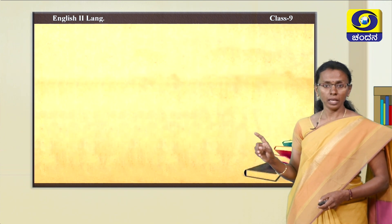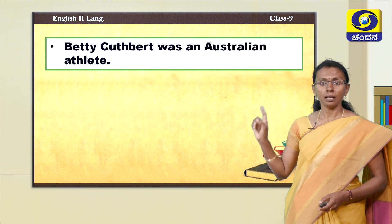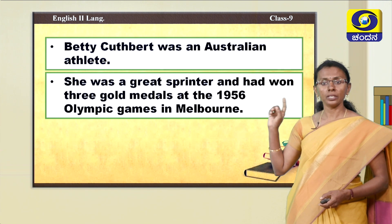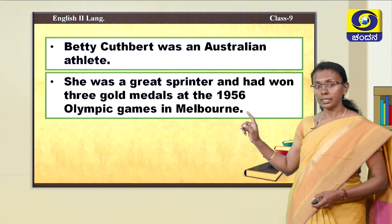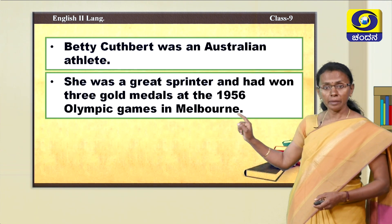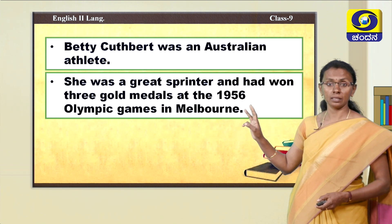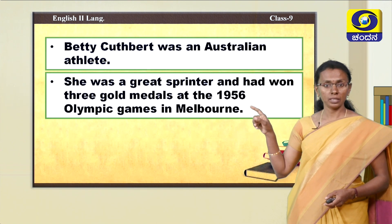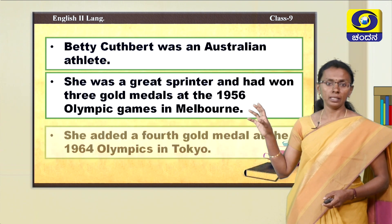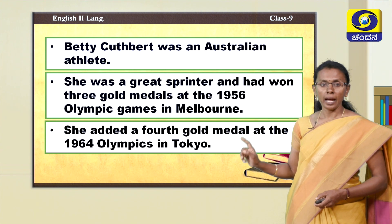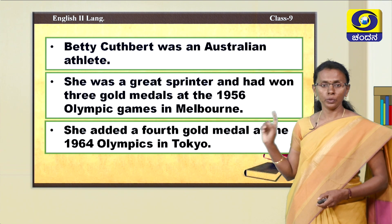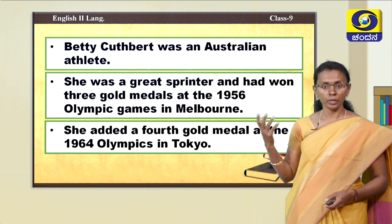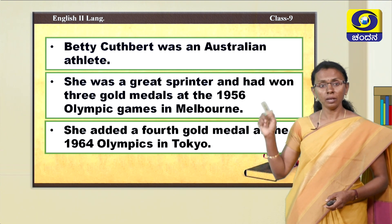Betty Cuthbert was an Australian athlete. She was a great sprinter and had won three gold medals at the 1956 Olympic Games in Melbourne. The poet is calling her golden because she won gold medals. She added a fourth gold medal at the 1964 Olympics in Tokyo. So she has won four gold medals in the Olympics — this is the important thing to remember why the poet makes a point that the girl is called golden.